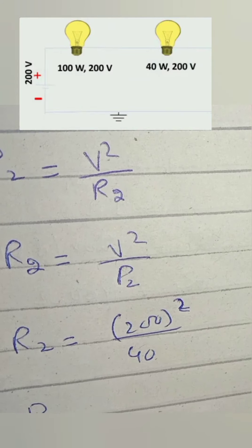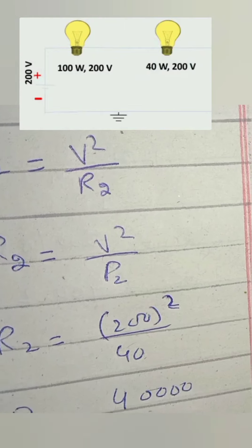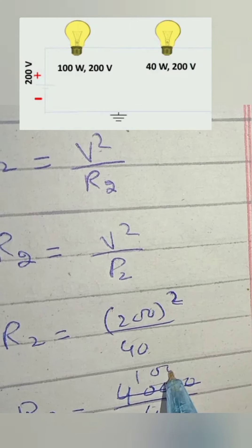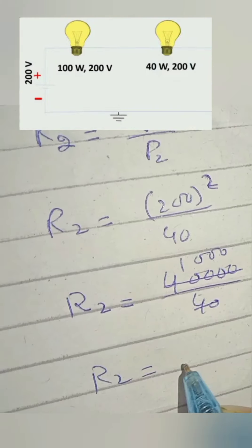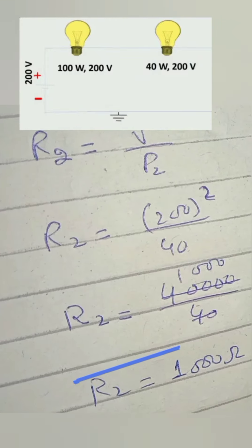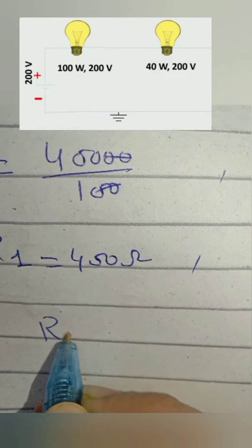Dividing these values we get 1000 ohms, which is the resistance of second bulb. We can also call it 1k ohm.